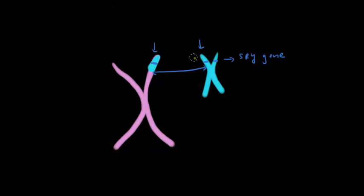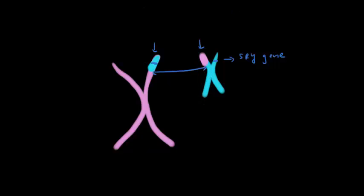And then we'd have some of the X chromosome material on the Y chromosome. This is going to be pretty problematic because the gamete that gets this Y chromosome will be in trouble — when fertilized, it's supposed to become a male because it has a Y chromosome, but it's actually missing the SRY gene that's going to turn it into a male. You can see that this can lead to a whole host of problems.